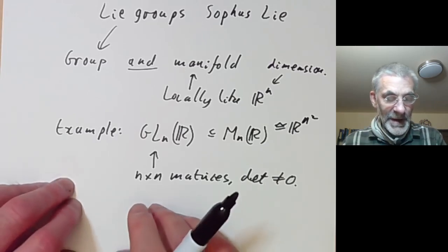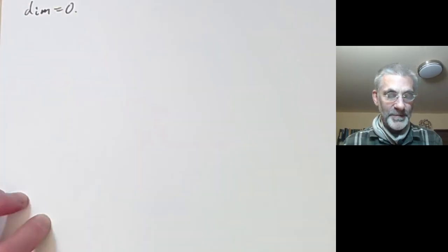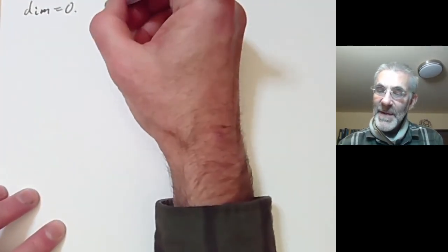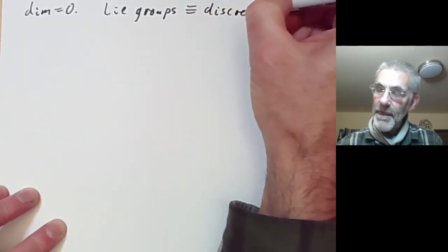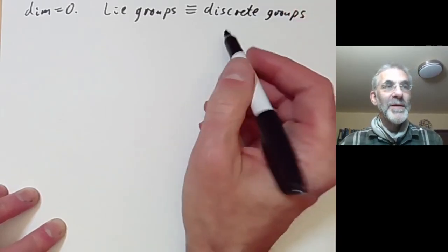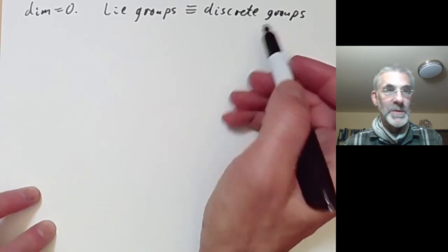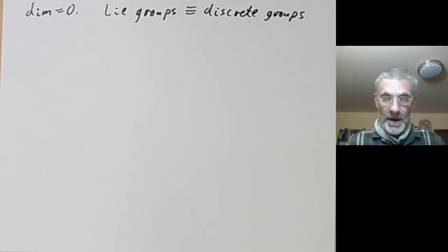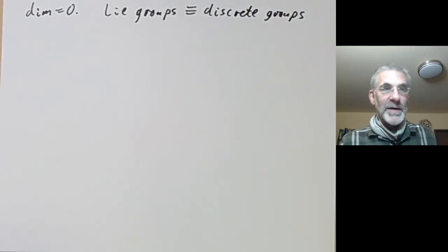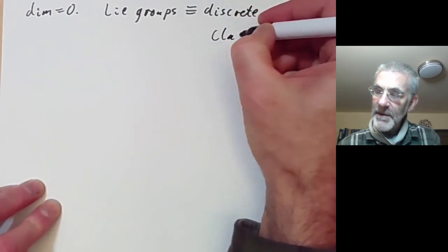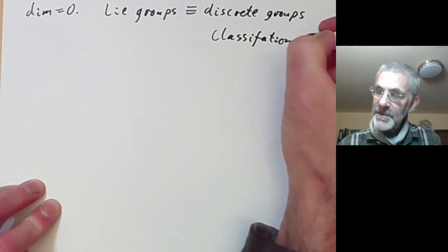In this introductory lecture I'm going to go through some of the simpler examples of Lie Groups. Let's start with dimension zero. Lie Groups of dimension zero are essentially the same as discrete groups — either groups where you've put the discrete topology on them, or groups where you just completely ignore the topology. We would like to classify Lie Groups, but we're already completely stuck in the zero-dimensional case because the classification of discrete groups is completely hopeless.